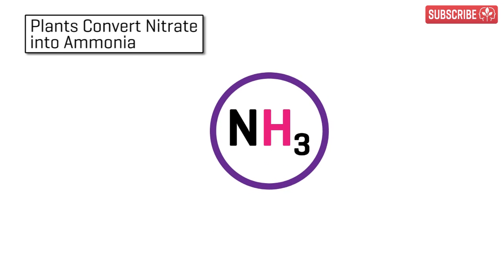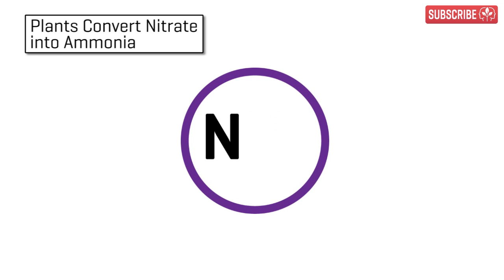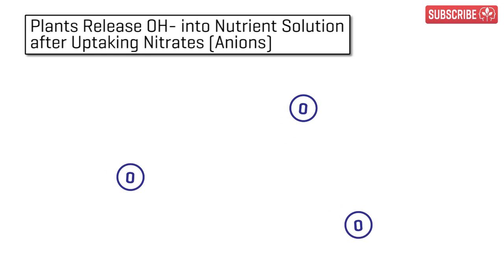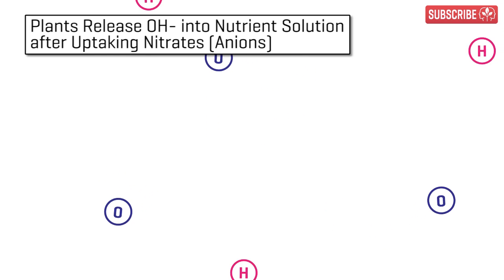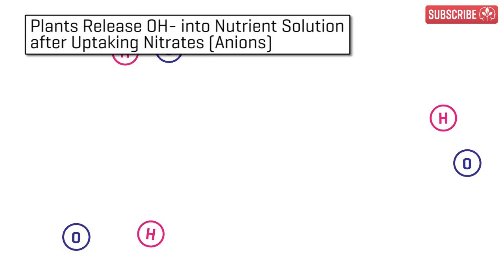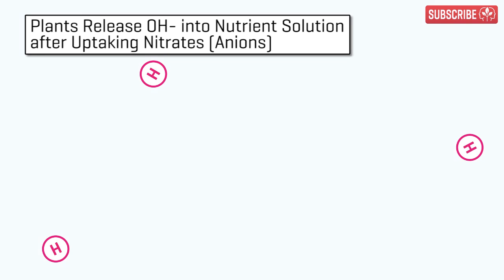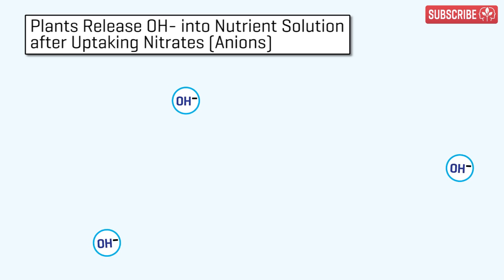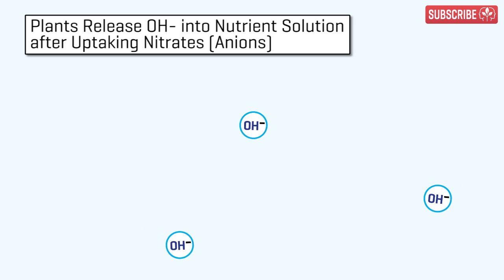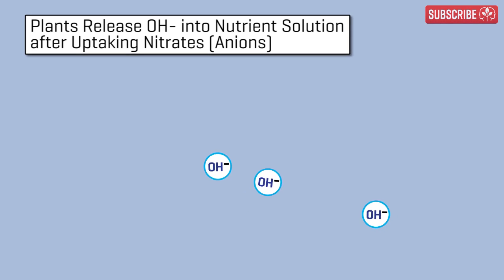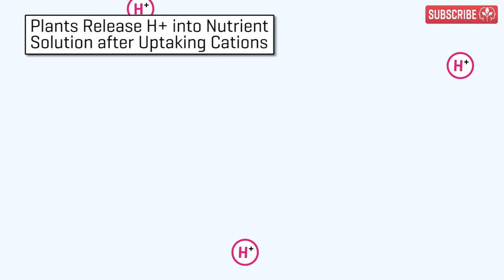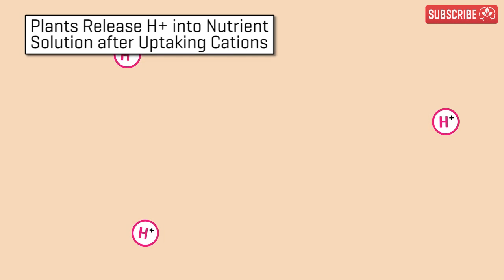Once in NH3 form, the plant can use the N part — the nitrogen. This begs the question: what happened to the three O's from the original nitrate and the three H's from the ammonia? They combined and were released back into the nutrient solution as OH minuses, also known as hydroxide ions. And what do hydroxide ions do? They raise your pH!